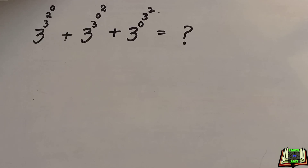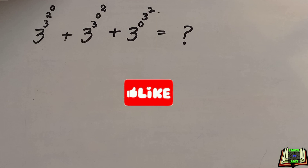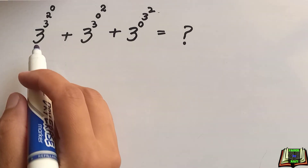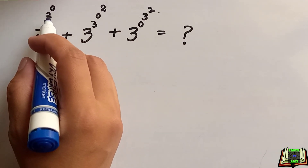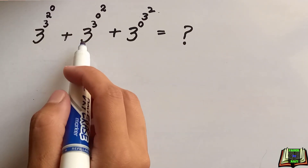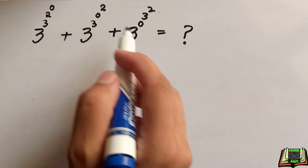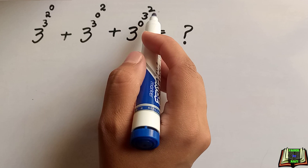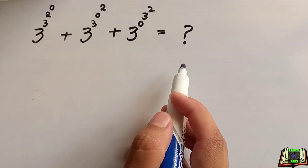Hello and welcome back. In this video tutorial we are going to solve a very interesting exponential expression where parentheses of parentheses of parentheses are present — meaning we have to solve nested parentheses. The question is: 3 raised to power 3 raised to power 2 raised to power 0, plus 3 raised to power 3 raised to power 0 raised to power 2, plus 3 raised to power 0 raised to power 3 raised to power 2. We have to find the value of this expression.